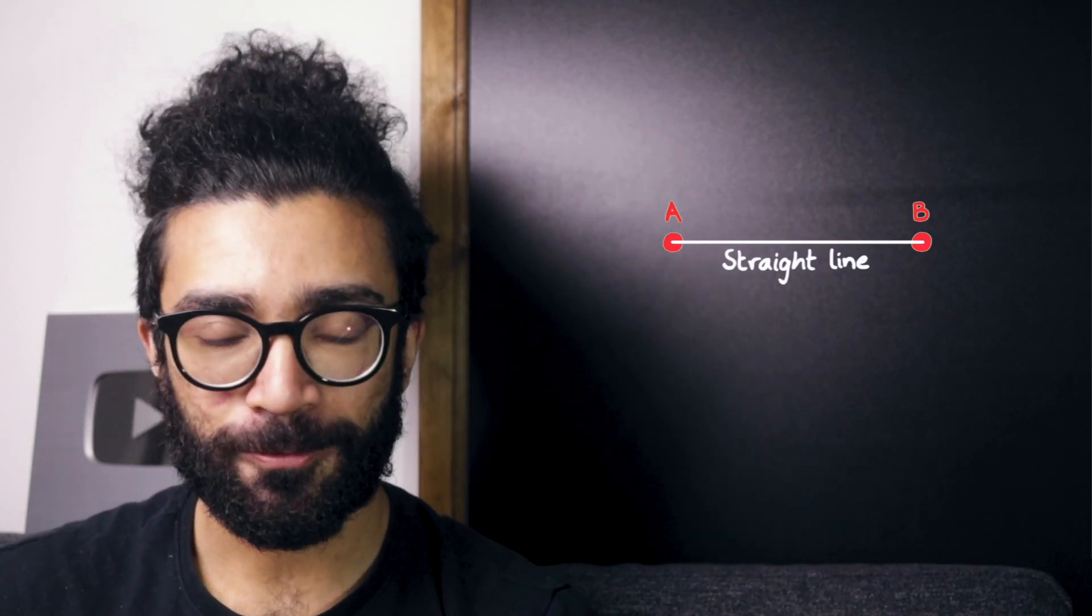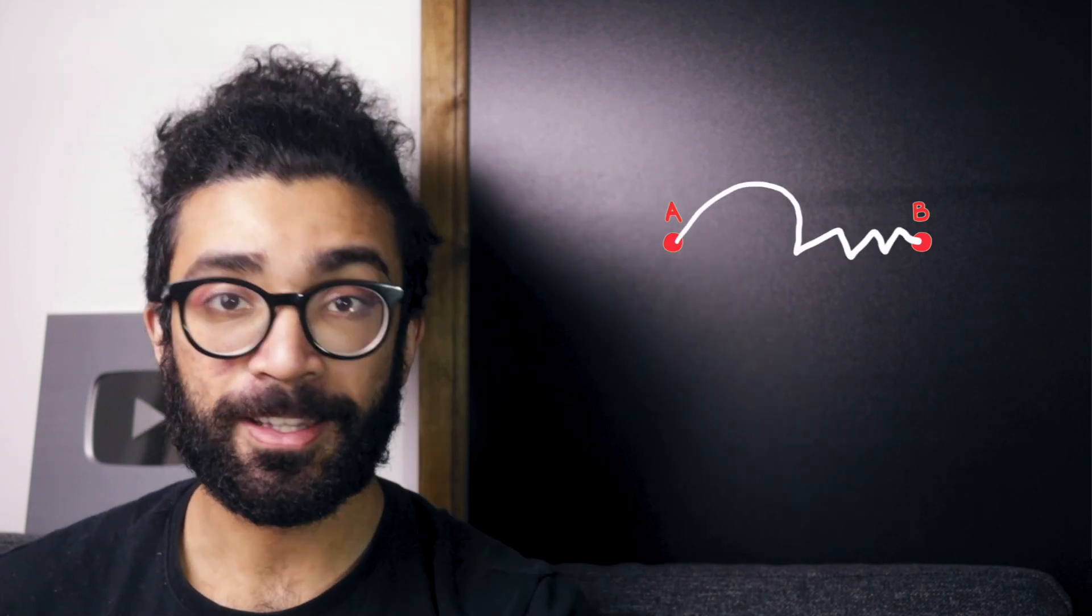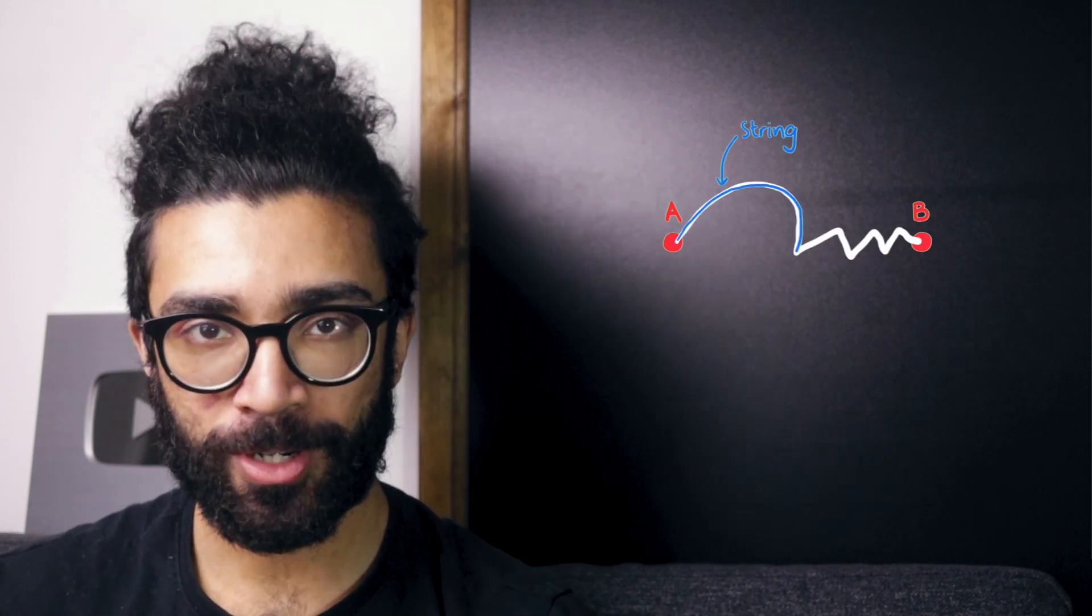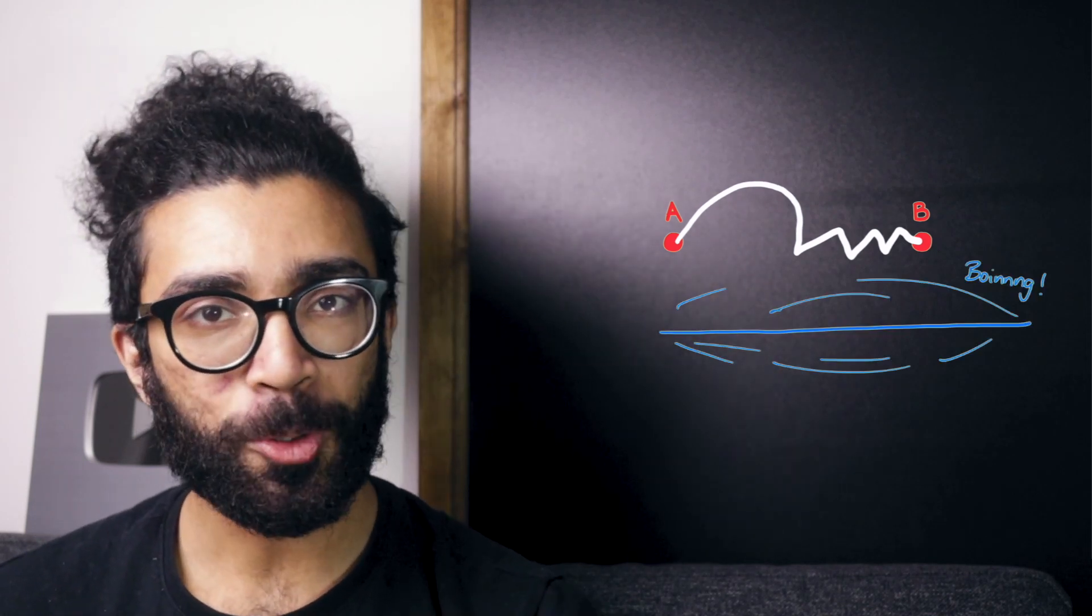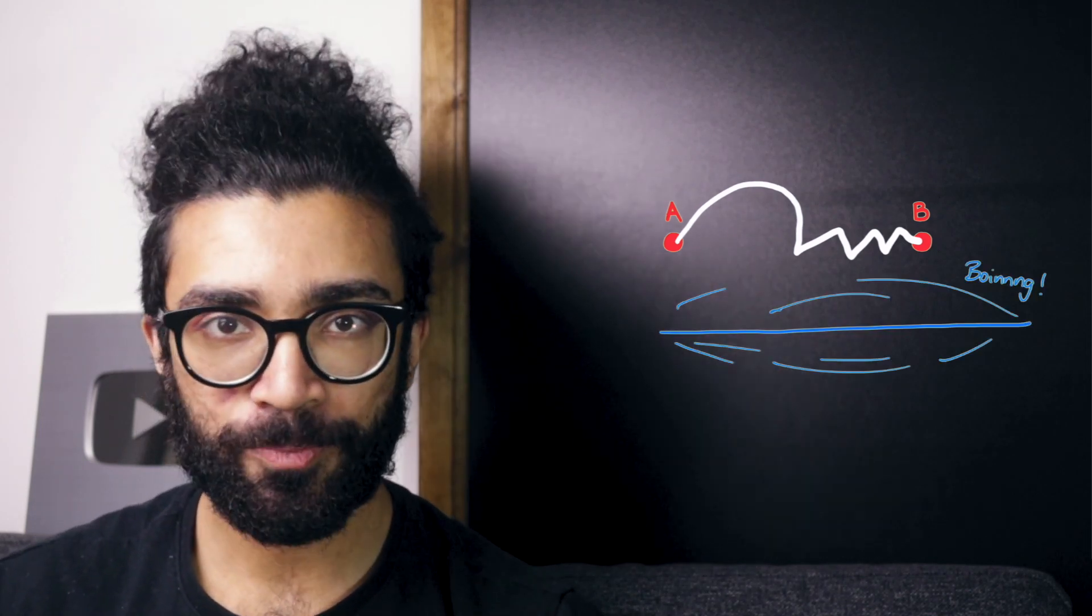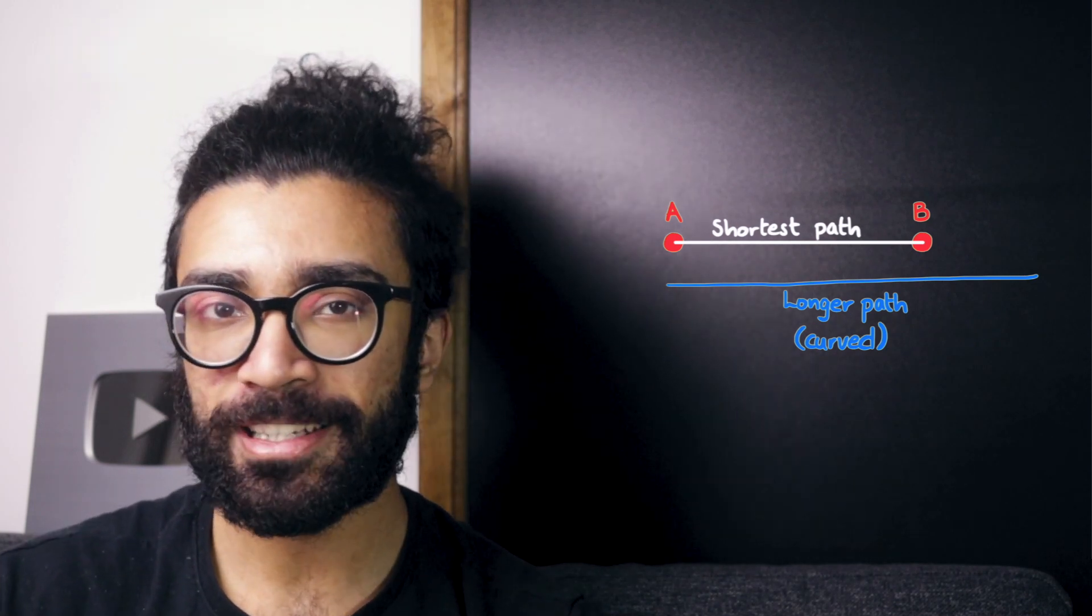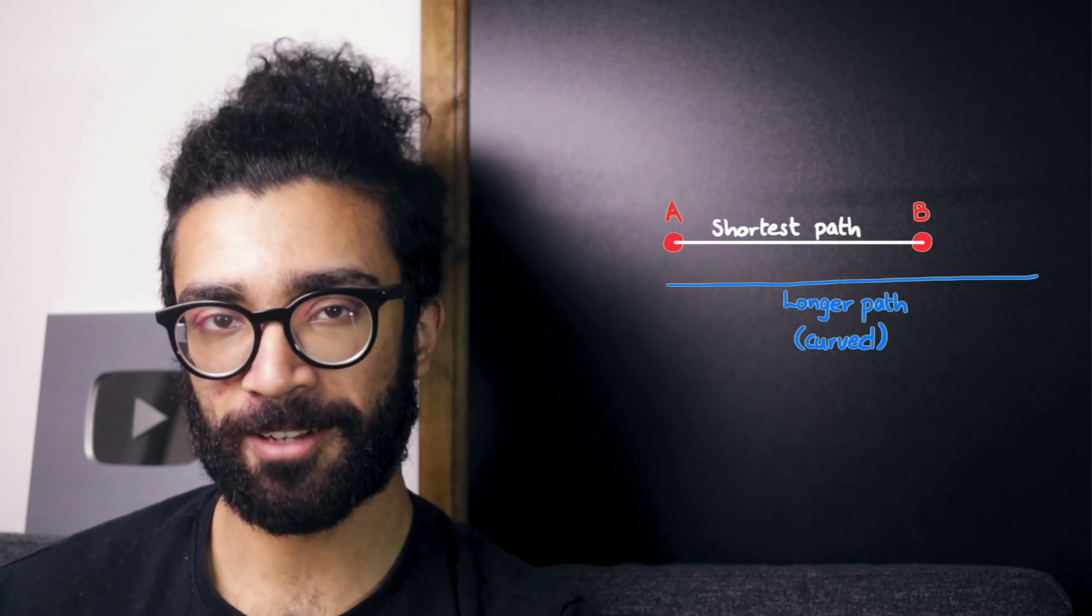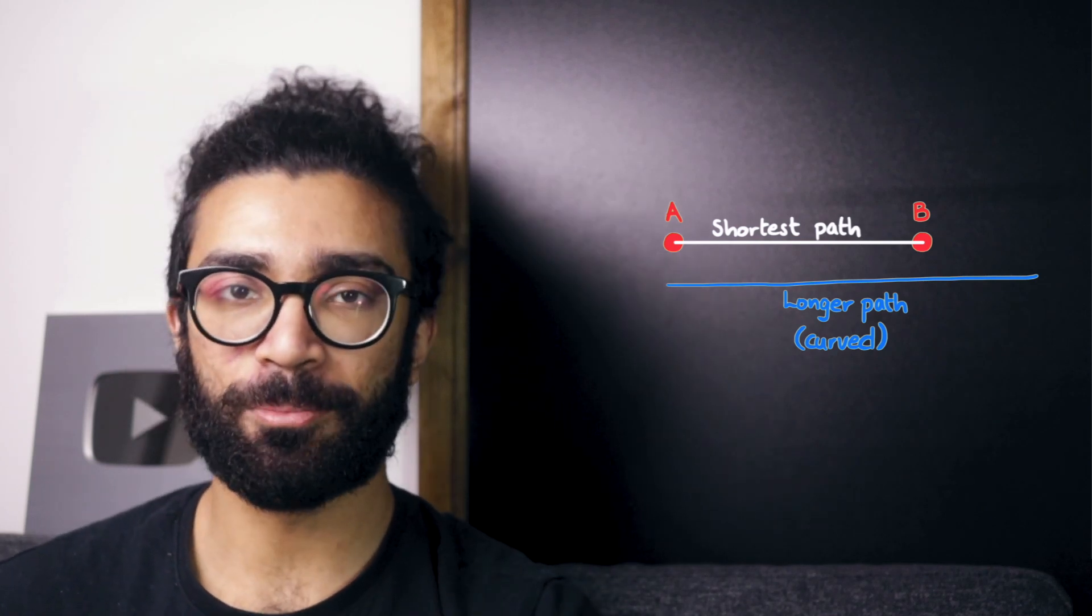If instead we took another path from point A to point B, like this curvy zigzaggy one for example, then we can imagine laying down a piece of string along that path and then straightening out that piece of string in order to compare the length of that path with the straight line. And we can see that this curvy zigzaggy path is obviously longer. And no matter what other path we come up with, the straight line path is always going to be the shortest.